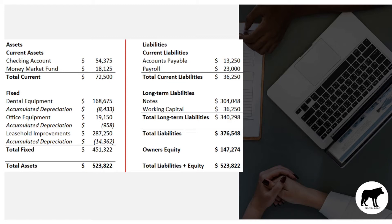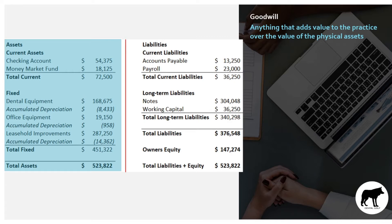Just as a quick definition: goodwill is basically value that a practice has over the value of the physical assets of that practice. When you go to buy a practice, you're going to be buying all the physical assets — the chairs, the drills, the office supplies — everything physical. But you're going to be paying a lot more than just those physical assets for two reasons: you're paying for the future cash flows of that practice and for the goodwill.